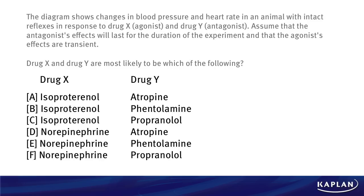Now let's look at the answers. We've got a lot of different answer choices, but here's some help: A, B, and C all have isoproterenol for drug X, whereas D, E, and F all have norepinephrine. For drug Y, it's three different combinations. So as long as you can figure out what drug X is first, that'll increase your chances by a great deal. Take a few moments and select what you think is the best answer.